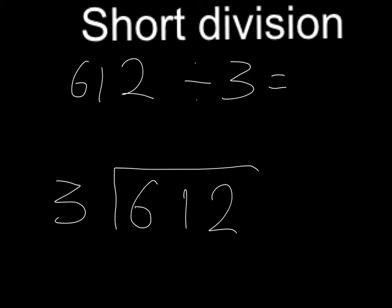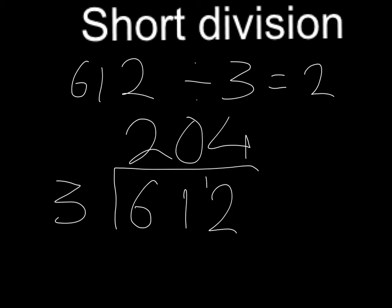So 3 into 6 goes twice, and then 3 into 1 goes 0, so we're going to carry the 1 over to make the 2 a 12. 3 into 12 goes 4 times, so your answer is 204.